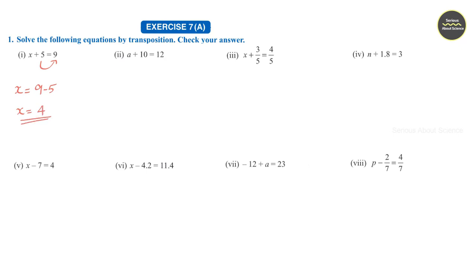Second question: a plus 10 is equal to 12. Here also we can take this 10 to the RHS. So it will become a is equal to 12 minus 10, that is, a is equal to 2.